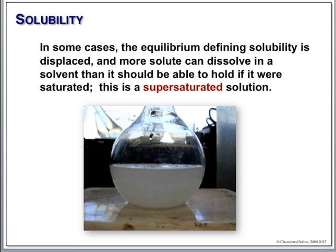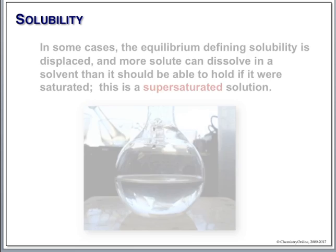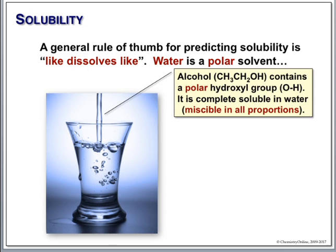Another neat thing about this is that when crystallization happens, the flask gets very, very hot — lots of energy is evolved. This is actually one strategy for storing something like solar energy. You heat up a solution; when the sun shines, it gets supersaturated. Then when the sun goes down and you're cold, you induce crystallization and get all your energy back.